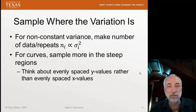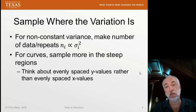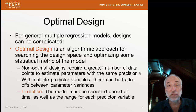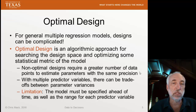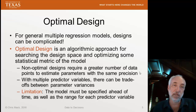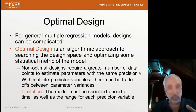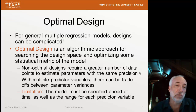You don't necessarily want Y values to be exactly evenly spaced, but we may not want the X values evenly spaced either. If we have an exponential response, for example, we might space our X values evenly on a logarithmic scale. Another topic I've mentioned before is optimal design. We were able to derive some optimal designs for simple linear models with one predictive variable, but for general multiple regression models, the designs can be very complicated because you have lots of combinations of these multiple variables. An optimal design is an algorithmic approach — the application of an algorithm to search the design space in order to optimize some statistical metric of interest to us.